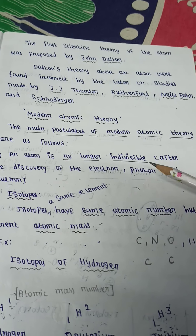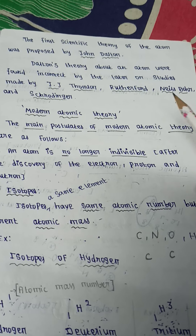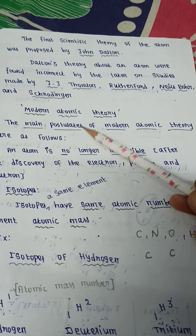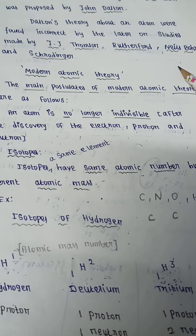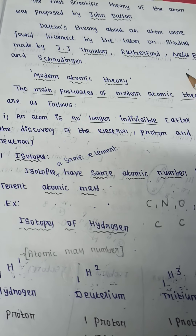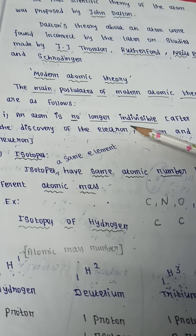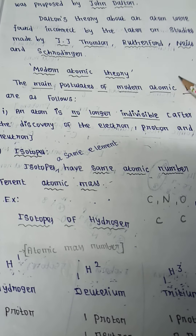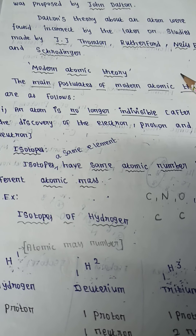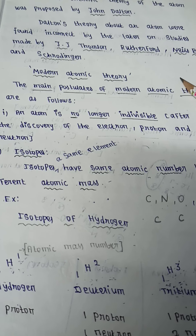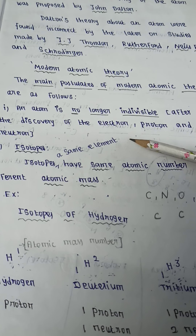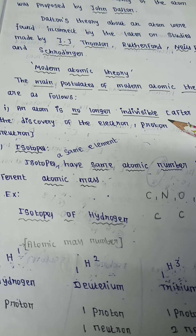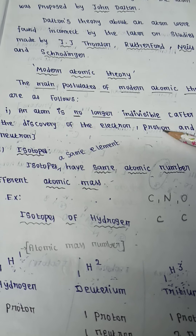So the main postulates of modern atomic theory are as follows. The first point: an atom is no longer indivisible. John Dalton said the atom is indivisible, but modern atomic theory shows that the atom is divisible into electron, proton, and neutron.